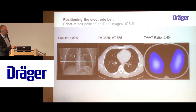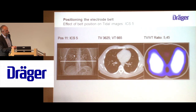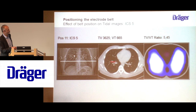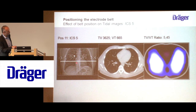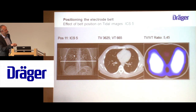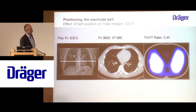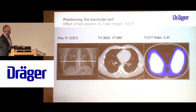Moving down to intercostal space 5, the EIT image still looks quite nice. When you magnify the colors, you can see that this mediastinal space is getting a little bit larger — which makes sense because the mediastinum is shaped like a triangle on the diaphragm, so the lower you go, the larger the space it occupies. That can also be confirmed by the CT scan.